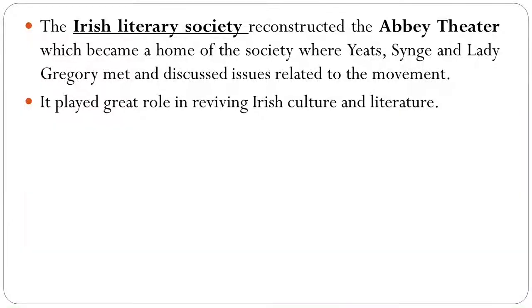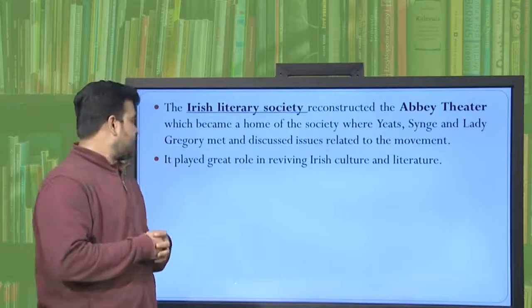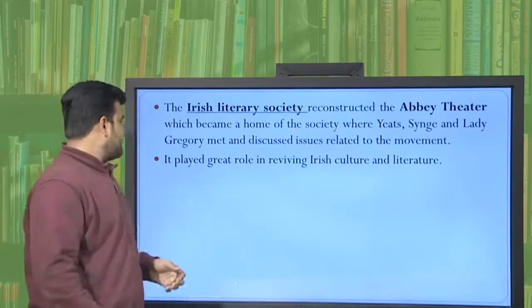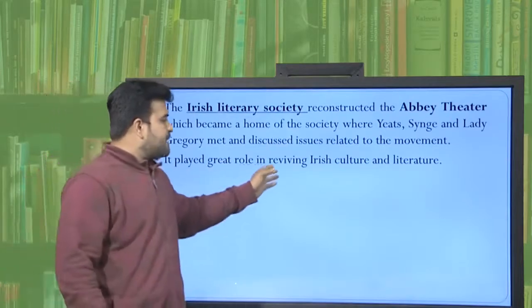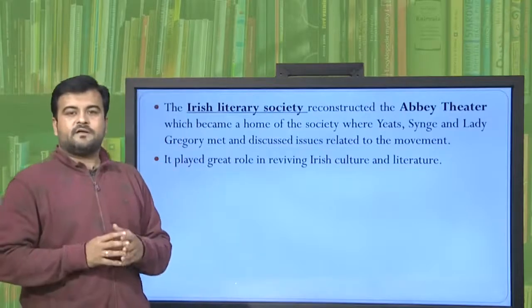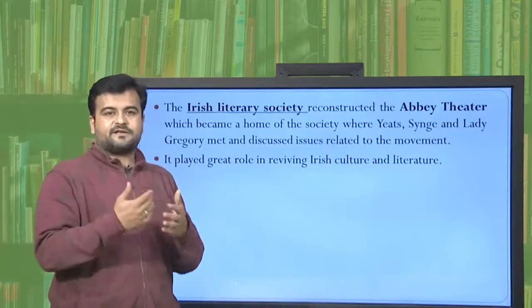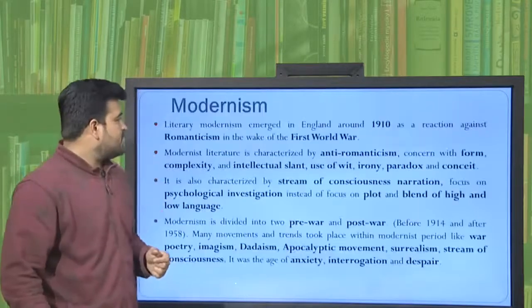The Irish Literary Society reconstructed the Abbey Theatre, wherein Yeats, Synge, and Lady Gregory came together, discussed related issues, and came up with something new and lucid. It played a great role in reviving Irish culture and literature. In summary, the Irish Movement revolved around Ireland — Irish literature, Irish life, Irish culture, and Irish character.